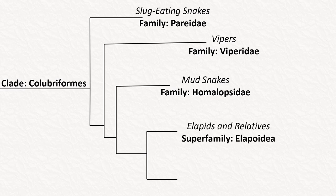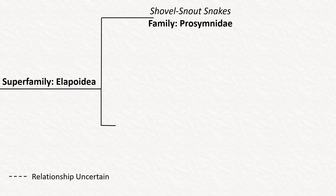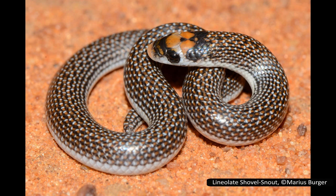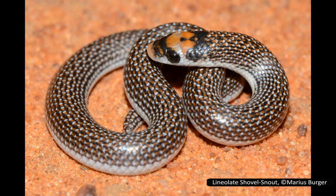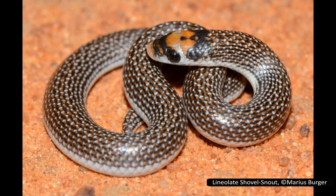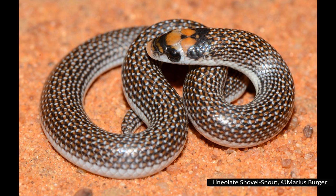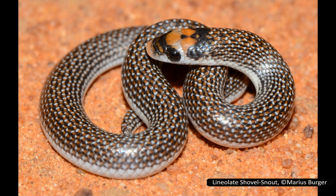The first superfamily in the Colubriforms is Elapoidea, or the elapids and their closest relatives. The first family in Elapoidea is Prosymnidae, or the shovel-snout snakes — one genus with 18 species, found only in sub-Saharan Africa, mostly fossorial or rock-dwelling. They are small snakes with a distinctive small wedge-shaped head, mostly eating eggs but also insects. Their bone structure is notably different from other snakes, including fewer and smaller teeth and a more rigid skull with less kinesis, making them historically very difficult to place in a phylogeny.